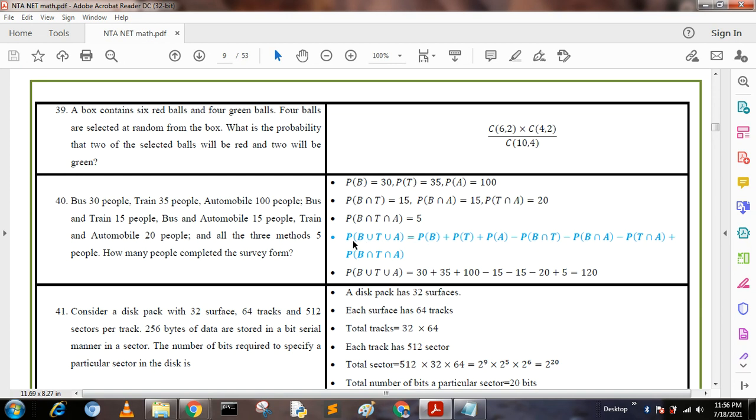From the formula we know that P(B∪T∪A) = P(B) + P(T) + P(A) - P(B∩T) - P(B∩A) - P(T∩A) + P(B∩T∩A). We put all these values and get the answer 120. I hope you understand. If you like more videos, kindly subscribe and press the bell icon.